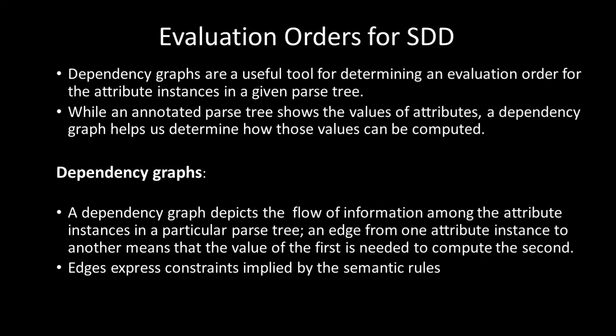The dependency graph describes the flow of information among the attribute instances in a particular parse tree. An edge from one attribute instance to another means that the value of the first is needed to compute the second. For example, if non-terminal A has attribute x and non-terminal B has attribute s, in a production where A produces B, we first calculate the value for B and assign it to A. Edges express constraints implied by the semantic rules.